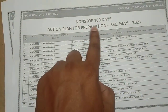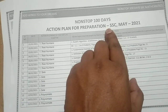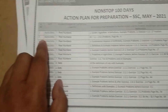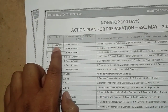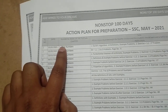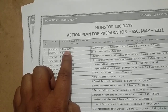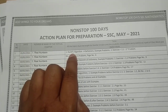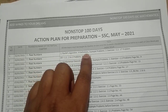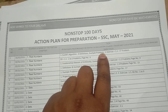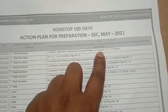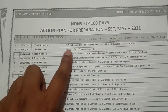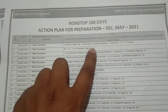You can see here the non-stop 100 days action plan for preparation SSC May 2021. We have a 100 days action plan. On Day 1, that is 1st February 2021, the chapter is Real Numbers. The topics to be covered are Euclid's algorithm, definitions and example problems, also Exercise 1.1, first problem. Similarly, on the second day, Exercise 1.1 problems 2 to 5, page number 6.